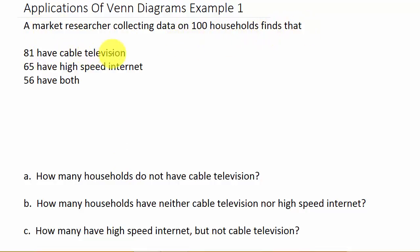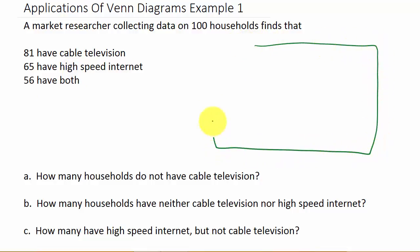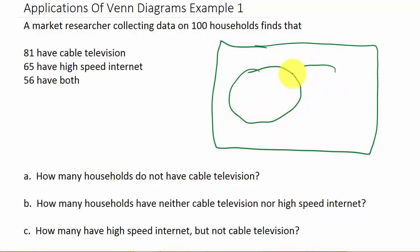The researcher finds that 81 have cable television, 65 have high-speed internet, and 56 have both. Let's draw a box with two sets — we'll call this one cable television and we'll call this one high-speed internet. The best way to start is with what they have in common.